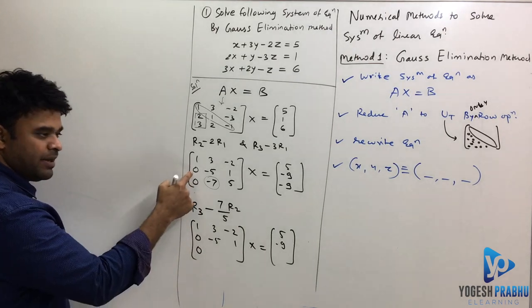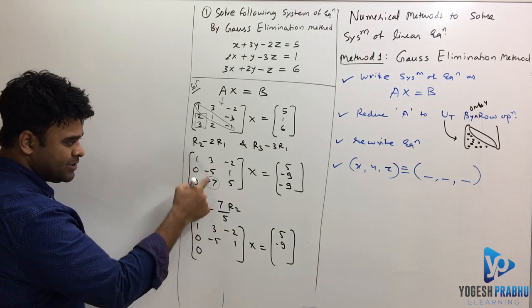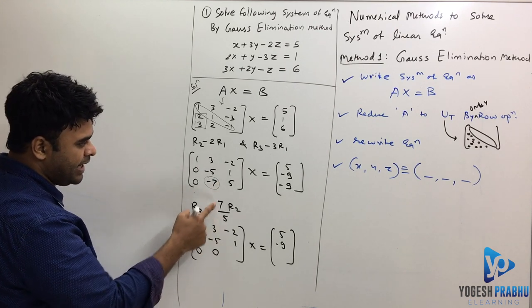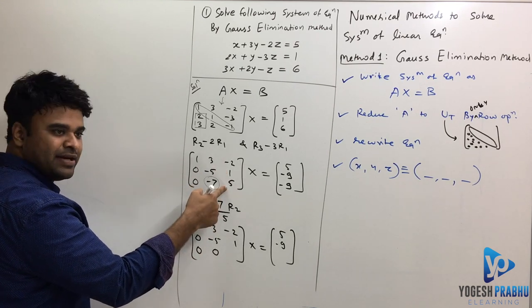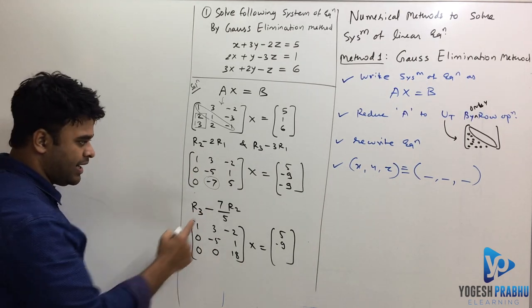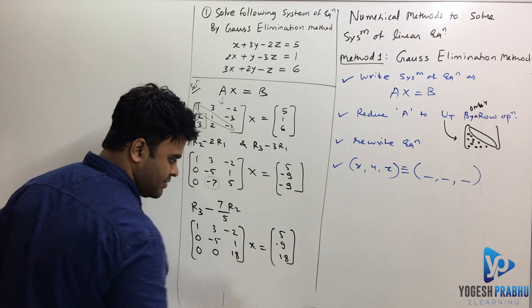This will stay 0 because this is 0. And if I apply this operation, this will become 0. That was the aim of this operation anyways. And then if I apply that here, it's going to be minus 7 by 5 plus 5. Do the math and it's going to be, I think, 18. And here also, I'll get 18.